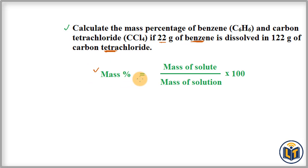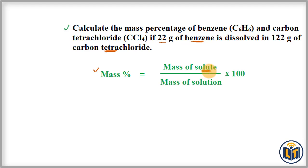The formula is: mass percentage = (mass of solute / mass of solution) × 100. This formula is for calculating the mass percentage of solute. When calculating the mass percentage of solvent, we put the mass of solvent in the numerator, with the same mass of solution in the denominator, multiplied by 100.